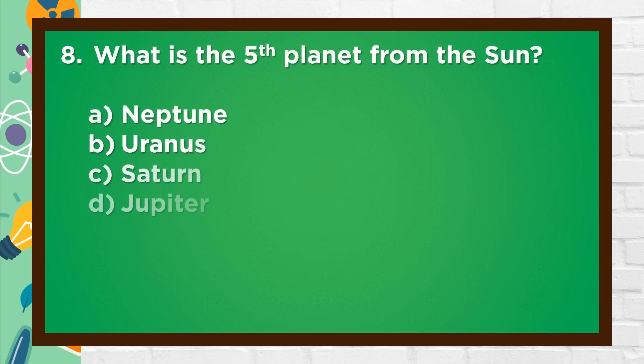Number 8. What is the fifth planet from the sun? A. Neptune. B. Uranus. C. Saturn. D. Jupiter.